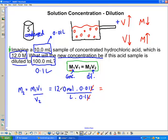So what we have is 12.0 times 0.01 divided by 0.1. Let me just get my calculator out just to make sure that we do this right.